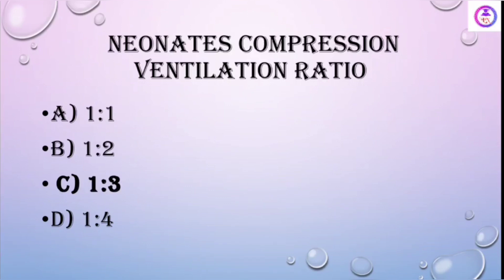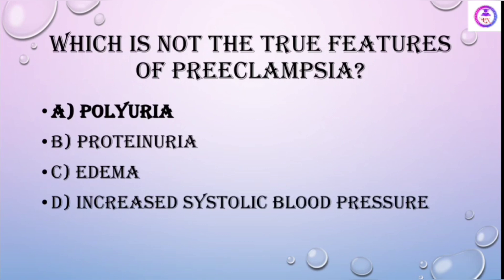Neonate compression-to-ventilation ratio is 1 to 3. Which is not a true feature of preeclampsia? Polyuria is not a feature.